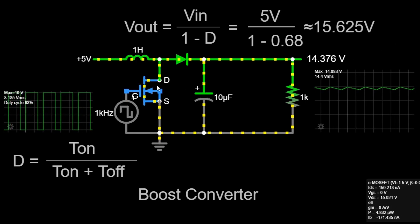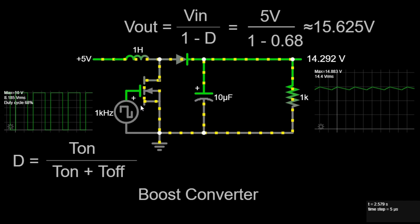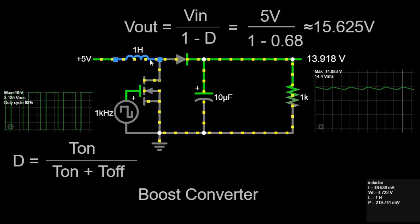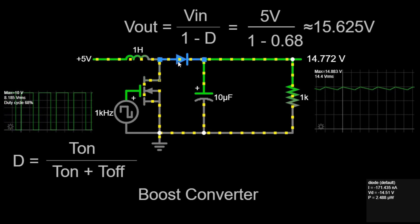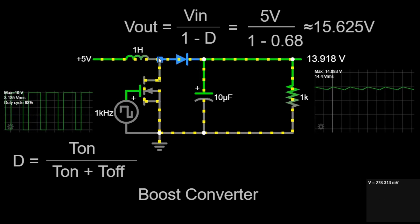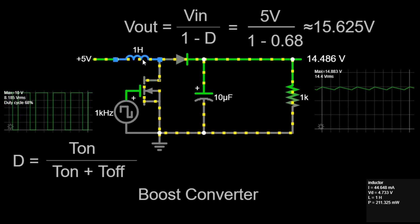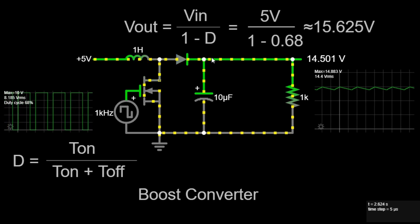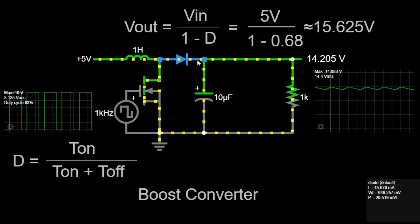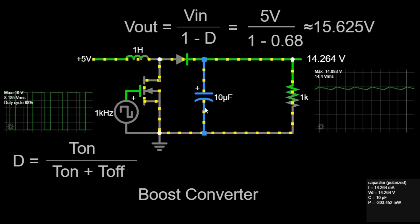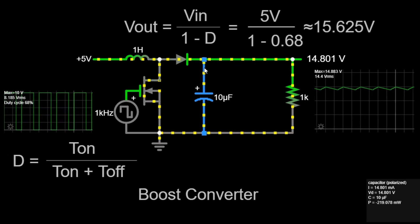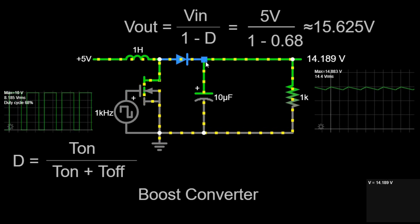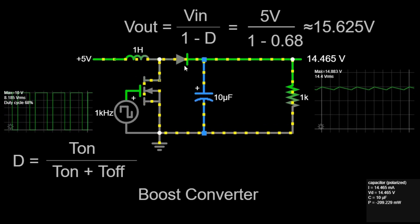Phase 2: switch open, also known as the off state. When the switch is open, the inductor's magnetic field collapses. The stored energy is released, and the inductor generates a voltage in addition to the input voltage. This combined voltage makes the diode forward biased, allowing current to flow through to the capacitor and the load. The capacitor charges, and the voltage across the load increases. During this phase, the energy stored in the inductor is transferred to the capacitor and the load, boosting the voltage above the input level.